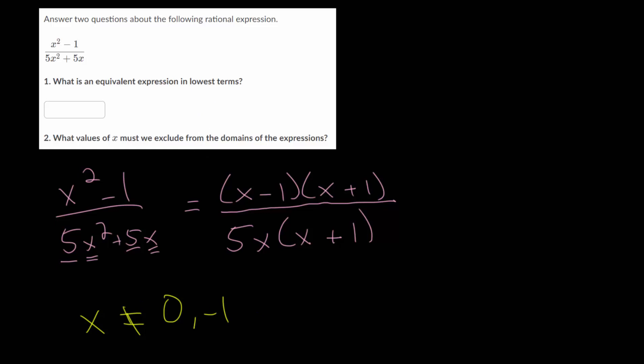Lastly, we need to rewrite this in lowest terms. Notice you have x plus 1 in the top and in the bottom. Those factors will cancel, and we're left with x minus 1 over 5x. This is our final answer, our equivalent expression in lowest terms.